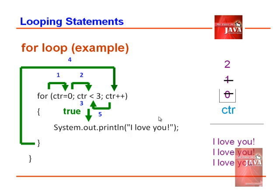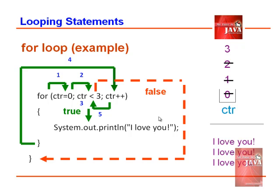Loop back. Add 1 to CTR. CTR is now set to 3. Is CTR less than 3? False. CTR is equal to 3, not less than. The program escapes the for loop block.